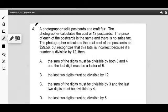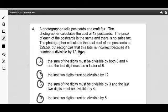Number 4. A photographer sells postcards at a craft fair. The photographer calculates the cost of 12 postcards. The price of each of the postcards is the same, and there's no sales tax. The photographer calculates the total cost of the postcards as $29.58, but realizes that this total is incorrect because if a number is divisible by 12, then we have all these possibilities based on what must be true if a number is divisible by 12.